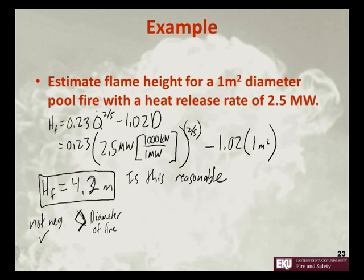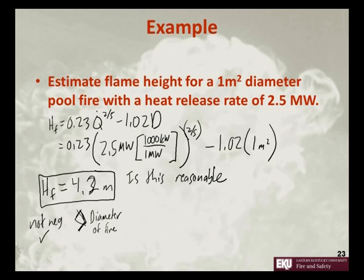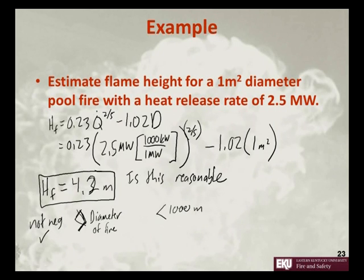If you've looked at pool fires in general, we usually see the flame height being larger than the diameter of the fire until you get to really, really big pools. Gasoline is quite volatile, so if you've seen a pool fire of gasoline, it burns with a quite tall flame. It's not 1,000 meters, and it's on the same order of magnitude as the diameter — so that's good.